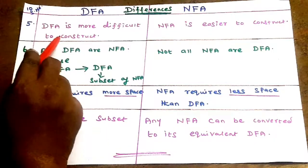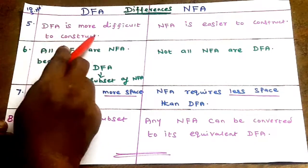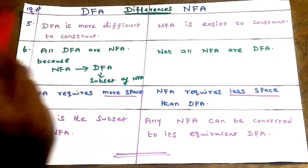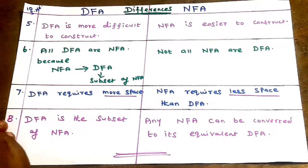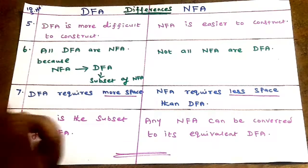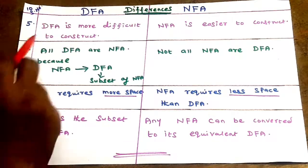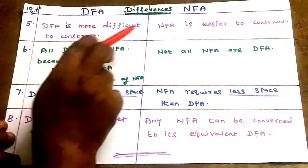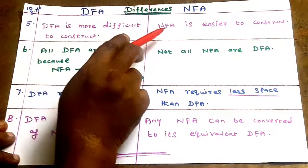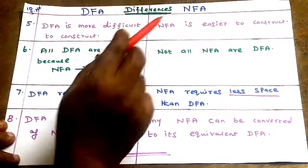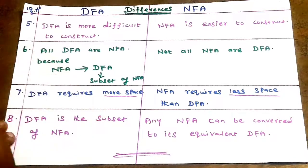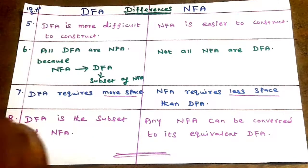DFA is more difficult to construct because one input leads to only one path. NFA is easier to construct because more than one path is allowed.